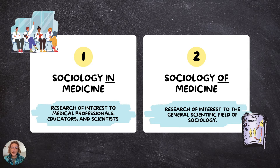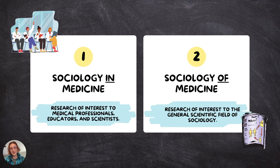Sociology of medicine tends to be research of interest to the general scientific field of sociology. Importantly, it's not that medicine is simply disinterested in sociology of medicine. The institution of medicine sometimes has a vested interest in silencing or arguing against sociology of medicine.